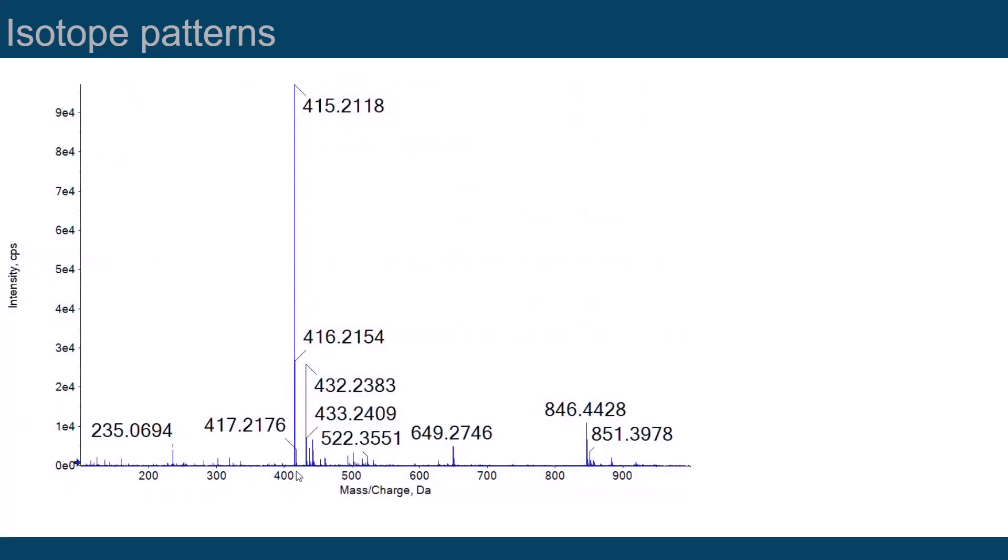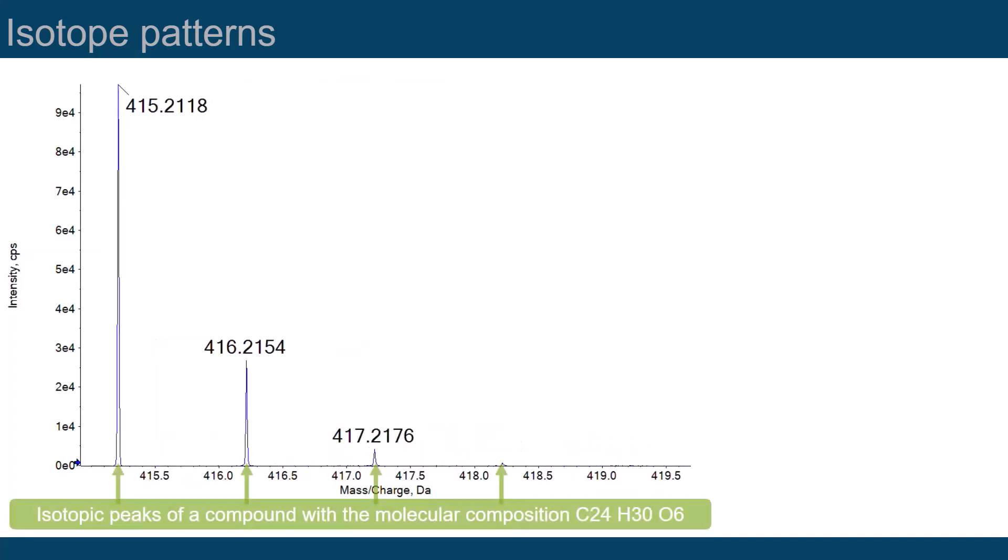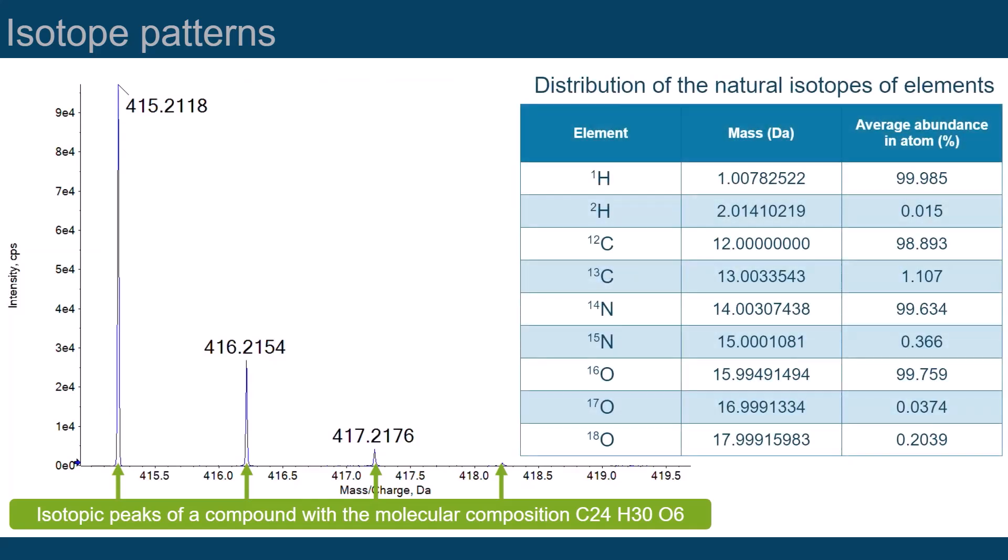If we take a closer look at the signal of a single ion, we realize that it consists of a group of peaks and not one peak. These are isotopic peaks of the compound that follow the distribution of the natural isotopes of elements.